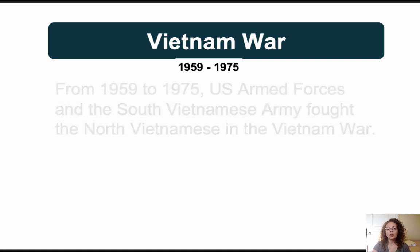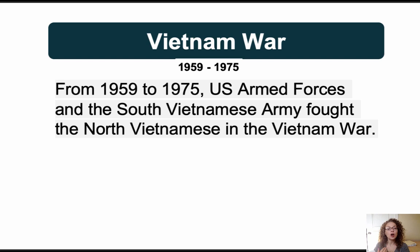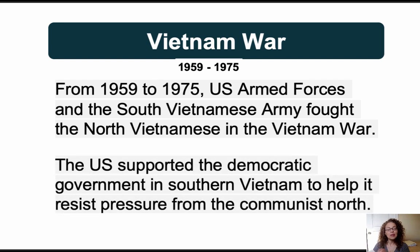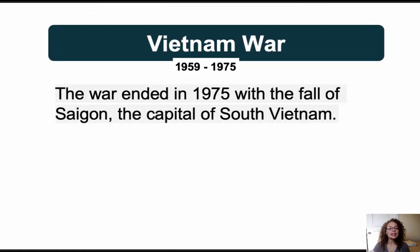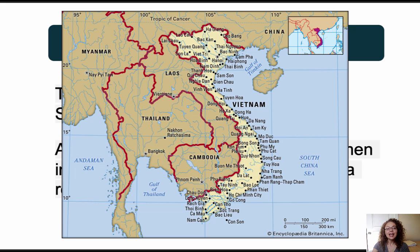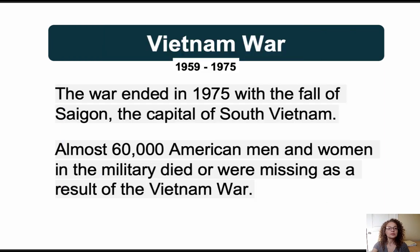The Vietnam War lasted from 1959 to 1975. U.S. armed forces and the South Vietnamese army fought the North Vietnamese. The U.S. supported the democratic government in southern Vietnam to help it resist pressure from the communist north. The war ended in 1975 with the fall of Saigon, the capital of South Vietnam — now known as Ho Chi Minh City, named after the communist revolutionary leader credited with uniting the country. Almost 60,000 American men and women in the military died or were missing as a result of the Vietnam War.